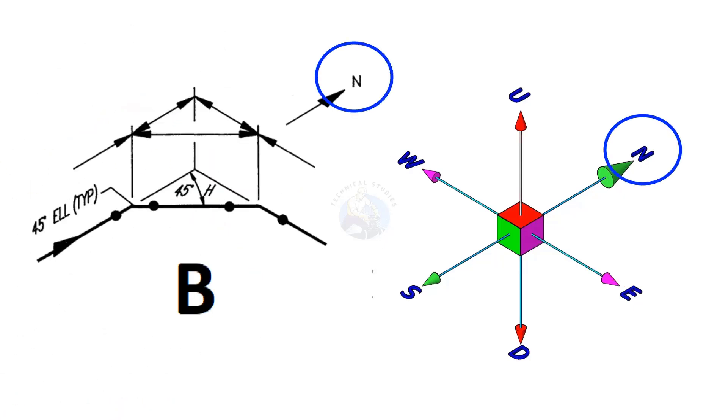In this drawing, the piping goes to the north direction, then turns and travels to the north-east 45 degrees.